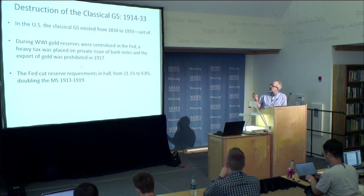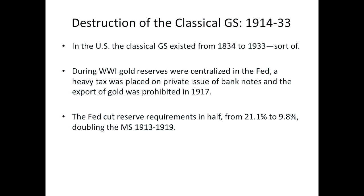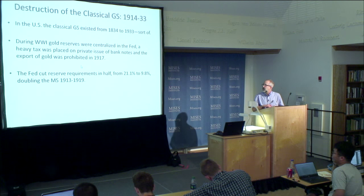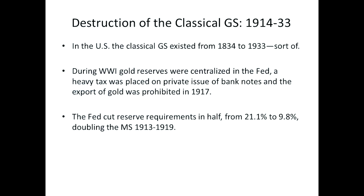The U.S. classical gold standard existed from 1834 to 1933, though it really began to die in 1914 as the government and central bank intervened more and more through inflation and other measures. During World War I, the U.S. was the last to really centralize gold reserves in the Fed. A heavy tax was placed on the private issue of banknotes — this is when private banknotes began to disappear and we began to use Fed notes. In the 1920s, it completely prohibited the issue of banknotes by private banks, and then the Fed cut reserve requirements in half, basically doubling the money supply during World War I.